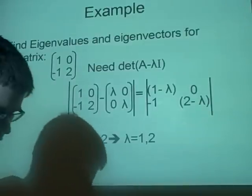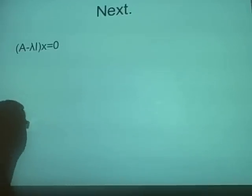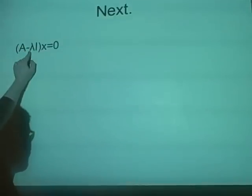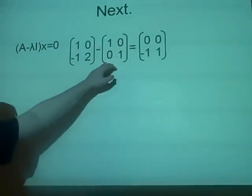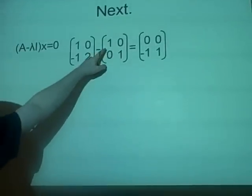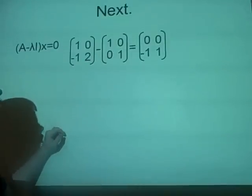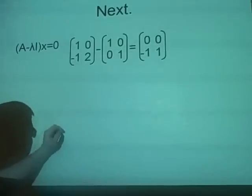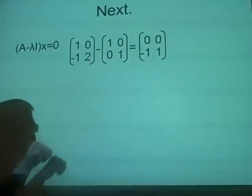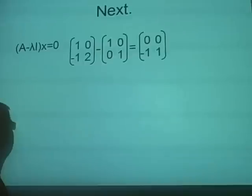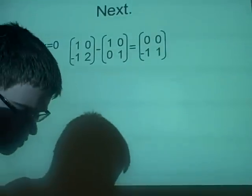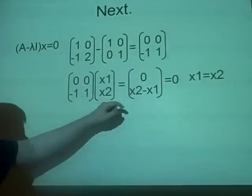Next we find the eigenvectors. For the eigenvectors we solve (A - λI)x = 0. We subtract using one of our eigenvalues — here using lambda equals 1. You also need to repeat this for lambda equals 2, but only lambda equals 1 is shown here. After doing the subtraction, we multiply by the column vector [x1, x2] and set it equal to zero.